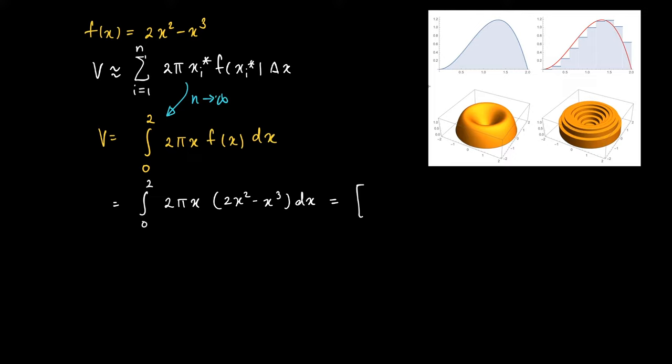So here we get as a primitive of this function, we get π times x to the power 4 minus 2 over 5 x to the power 5 within the boundaries 0 and 2.